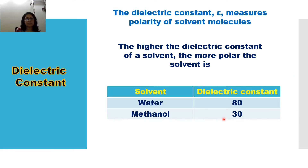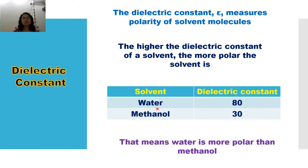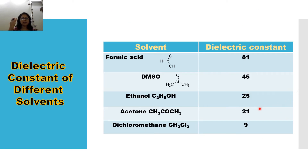Here we have two examples: water and methanol. Water's dielectric constant is 80 and methanol's dielectric constant is 30. Since water has a higher dielectric constant than methanol, water is more polar than methanol. A few more solvents are given: formic acid, dimethyl sulfoxide (DMSO), ethanol, acetone, and dichloromethane. Formic acid's dielectric constant value is 18 and dichloromethane's is 9.